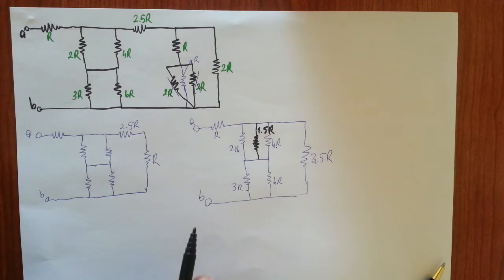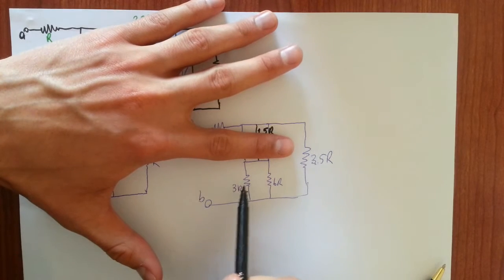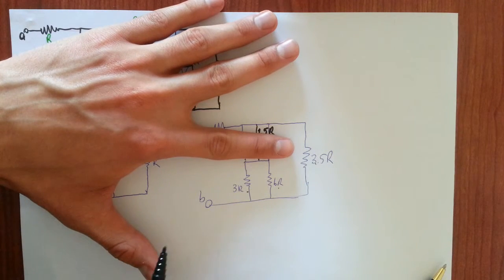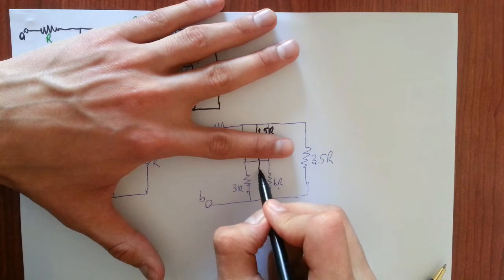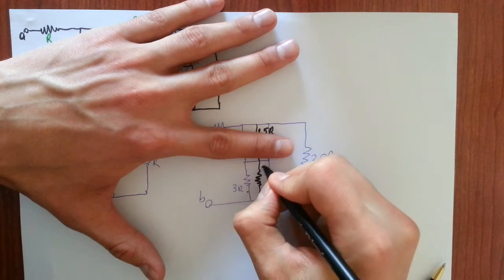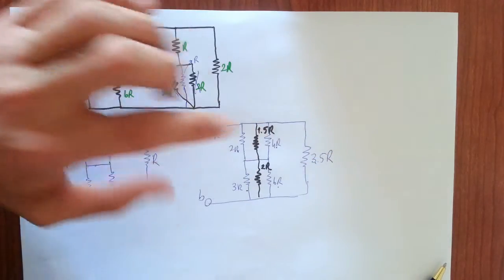And also, when you close these two, these 3R and 6R are in parallel with each other. We can also reduce them into one single resistor with value 2R. An easy algebra again.